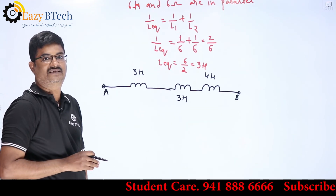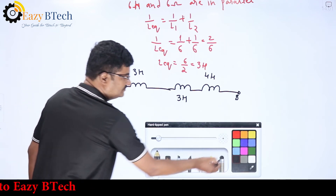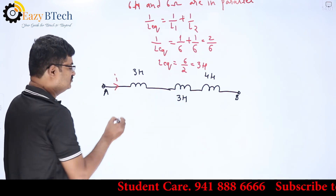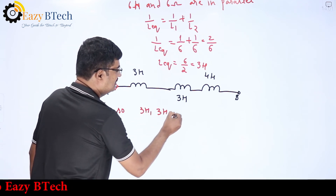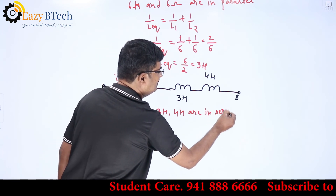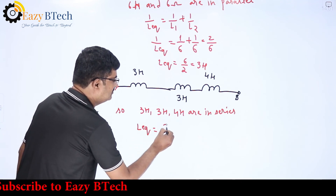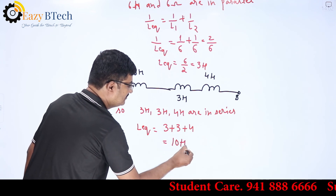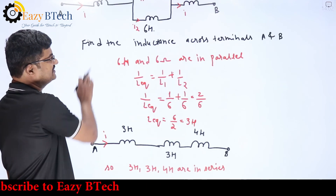Now I want the equivalent inductance across terminals A and B. Looking at the current, the same current I is flowing through all the inductors. So 3 Henry, 3 Henry, and 4 Henry are all in series. Therefore, L equivalent equals 3 plus 3 plus 4, which equals 10 Henry. This is the equivalent inductance across terminals A and B.